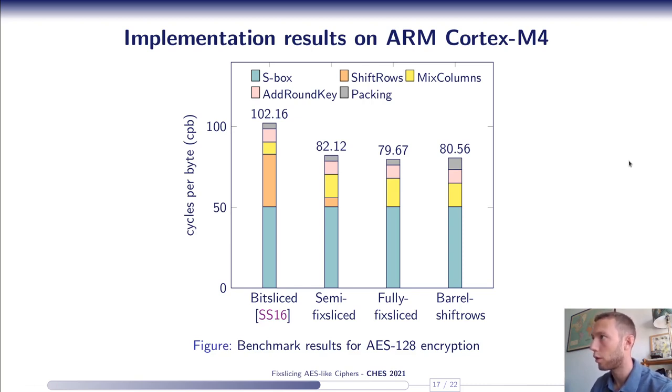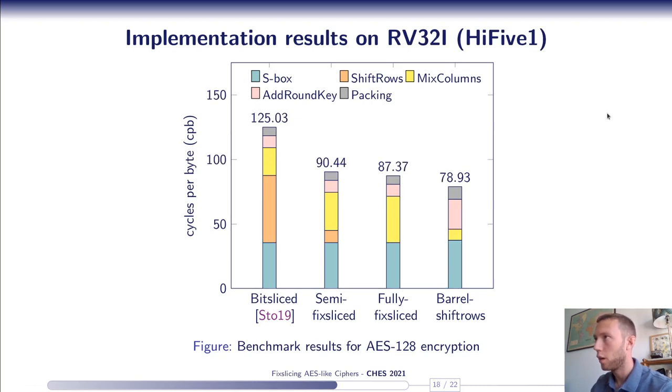And here are the results of our benchmark on ARM Cortex-M4 processor. So, the previous results by Stoffelen and Schwabe run around 100 cycles per byte, while our fully fixsliced implementation runs around 80 cycles per byte. Note that we almost have the same results for the fully fixsliced and the barrel shift rows representation. So, indeed, as expected, the barrel shift rows is not that efficient because of all the loads and stores we have to do on the stack, because we lack registers to store the entire internal state. So, overall, with fixslicing, we have roughly 20% speed improvement over previous results.